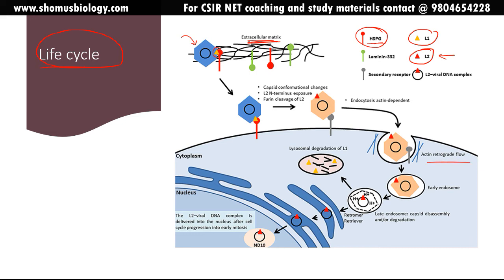After L2 N-terminus exposure, actin-mediated endocytosis or retrograde flow begins — retrograde meaning from the membrane towards the nucleus, opposite to anterograde flow which goes from nucleus towards membrane. Early endosome formation follows, and then as the pH changes there is degradation and release of capsid proteins. The L1 is degraded by the lysosome, but the circular DNA genetic material along with L2 is transferred from the late endosome.